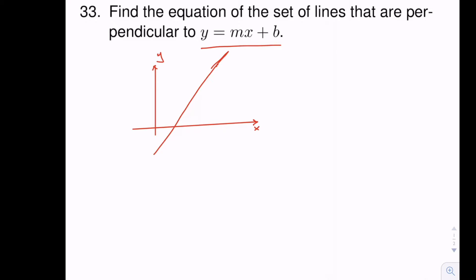So this is mx plus b, and if we want to find one of the lines that is perpendicular to this, let's pick a point and draw a perpendicular line to our given line. This angle is 90 degrees, and this is just a sample line out of the set of lines perpendicular to our given line. Another line can be this line, another can be this line, or another can be this line.